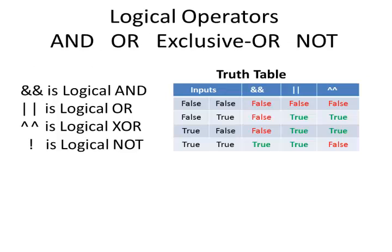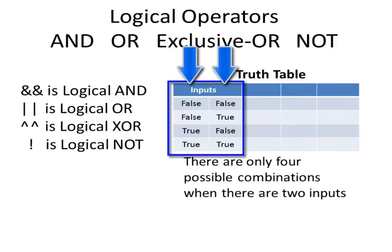Here is a truth table for the AND, the OR, and the exclusive OR. Those three operators each have two inputs. With two inputs, there's only four possible combinations: false false, false true, true false, and true true.